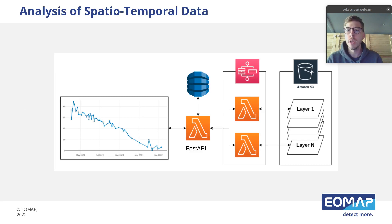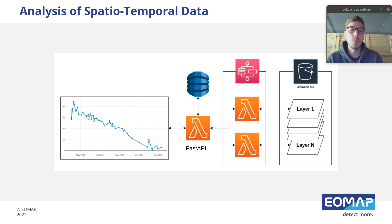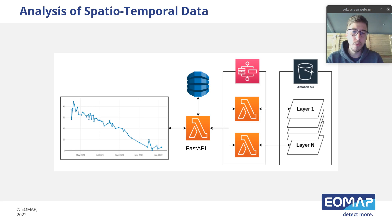Now I would like to describe the analysis of spatial temporal data in a little more detail. The orange rectangle with the lambda sign represents an AWS Lambda function, which is a serverless function. If a user wants to get a time series for a user-defined area, the request goes to the first Lambda function — a backend written in Python with FastAPI — which queries the database for all layers belonging to a specific area. Then, for each layer, another Lambda function is started in parallel. So it doesn't matter if we have ten or hundreds of layers; it's a very fast and flexible way to analyze multiple datasets in the same amount of time, independent of the number of layers.